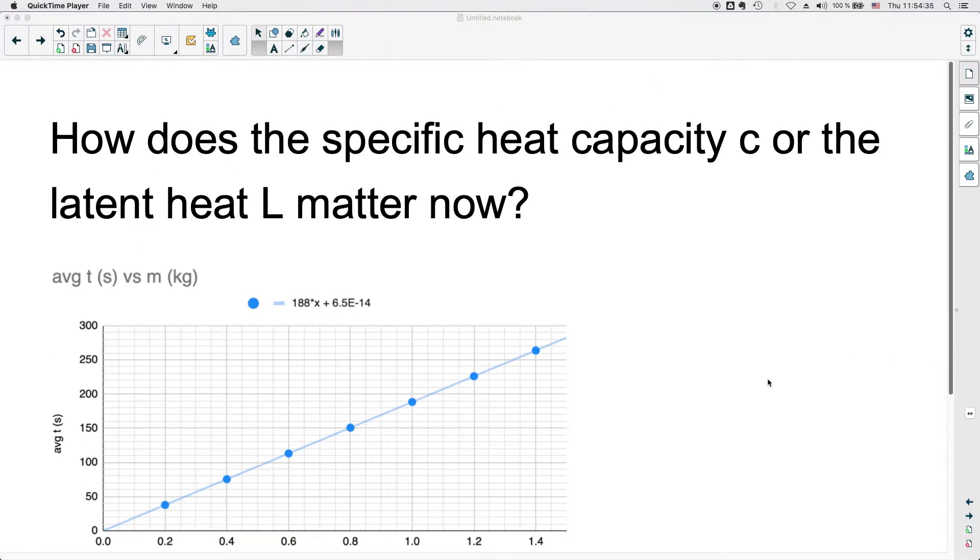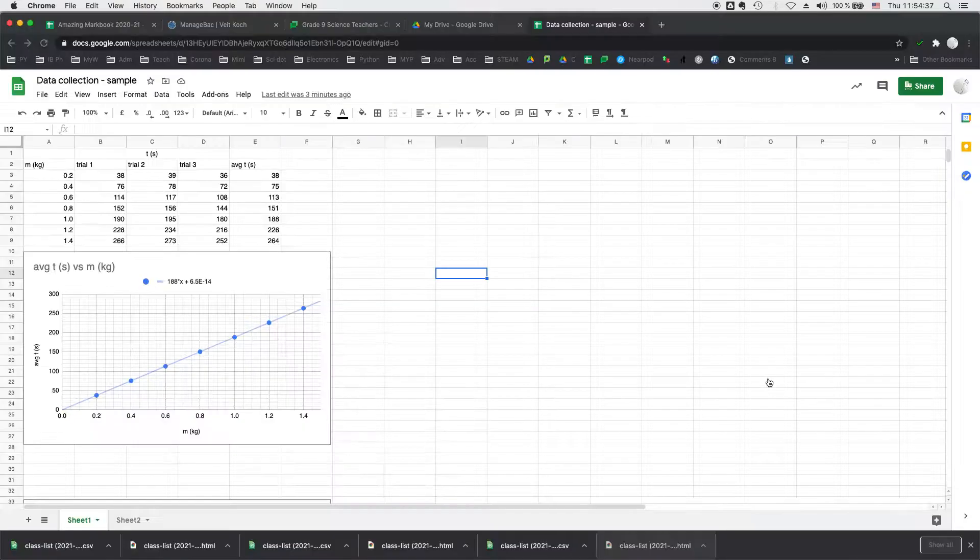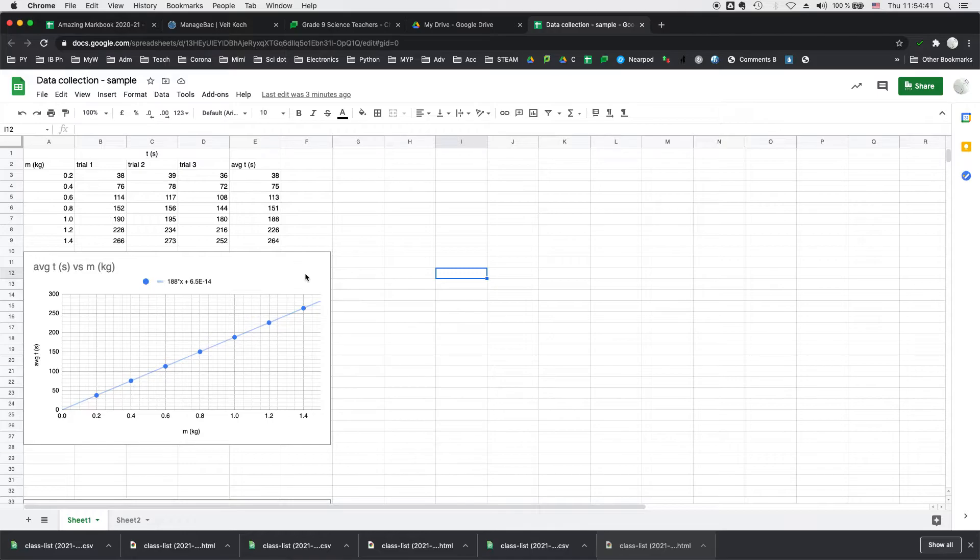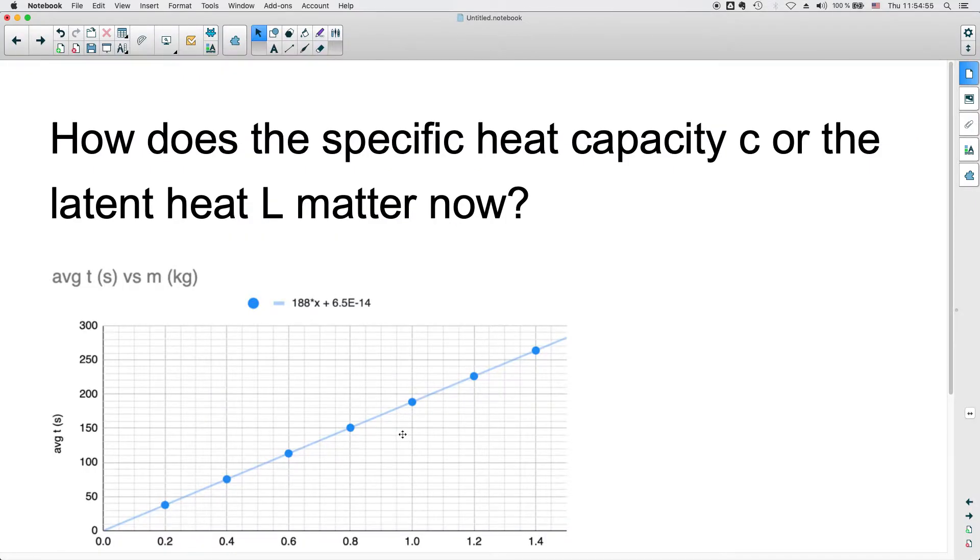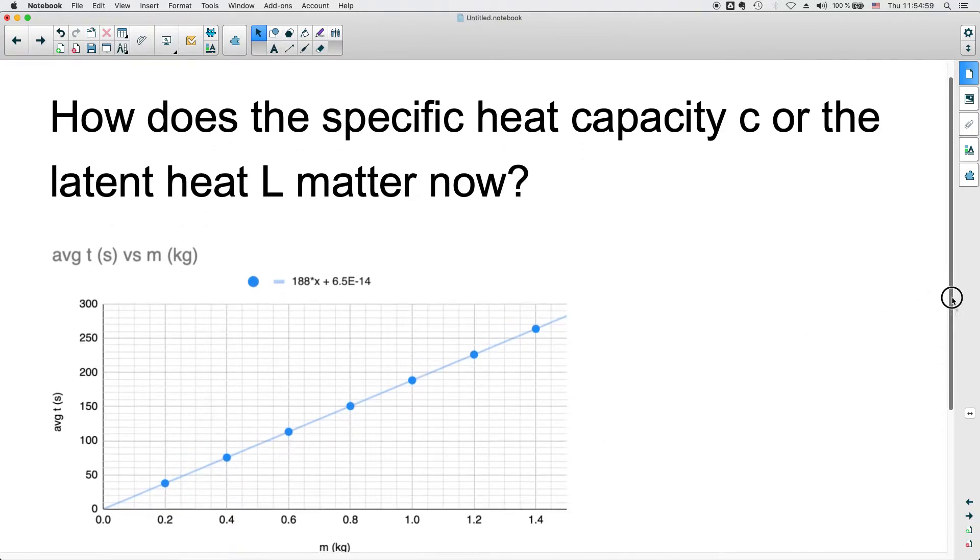Let's have a look at the experiment that I shared with you before, the data that I shared with you rather, where the mass was changed and you would then measure the time that it would take for the water to reach the boiling point as you heat it in the kettle. So the results of this, the same graph that you saw there a moment ago, is here on this page.